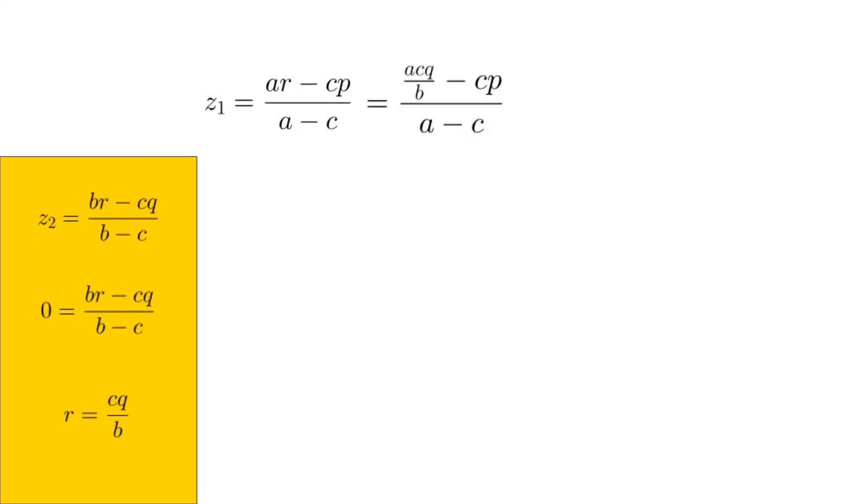We can now substitute this value of r back into our equation for Z1, and with a bit of factoring right as a product of the radii A, B, and C, and an expression involving the centers Q and P.